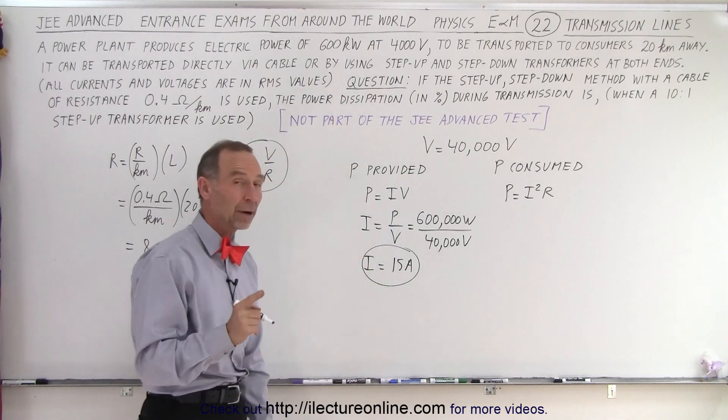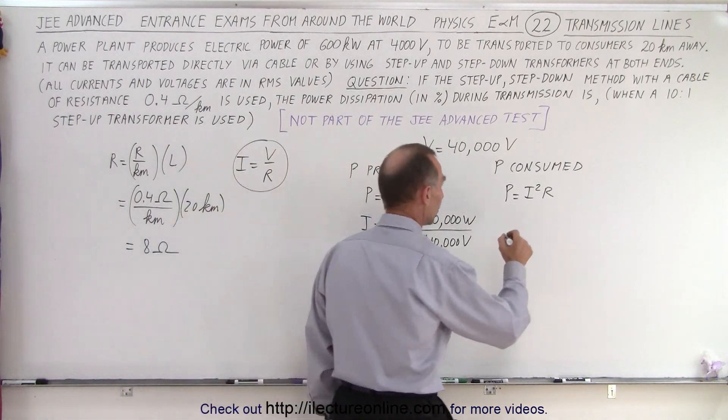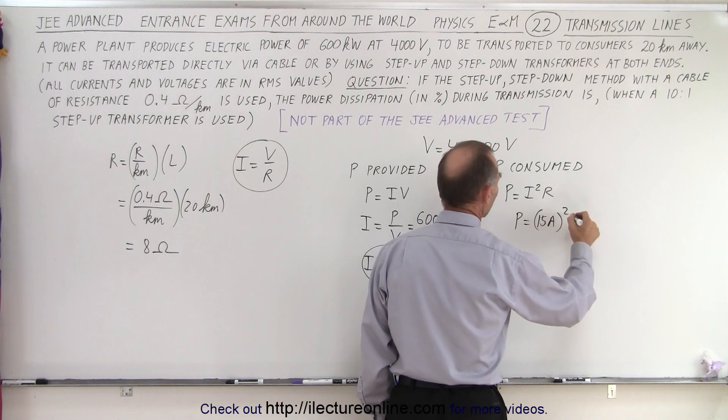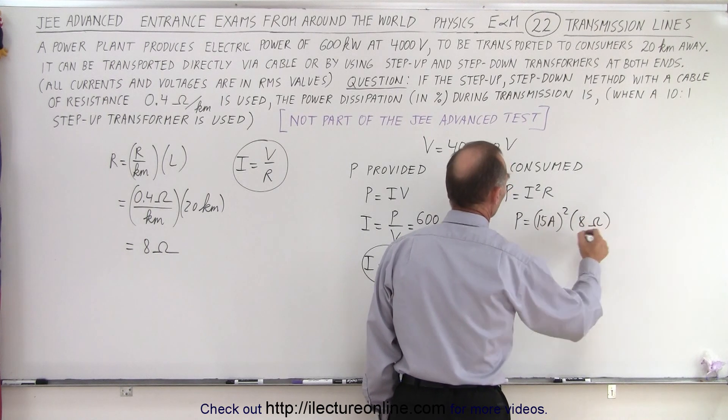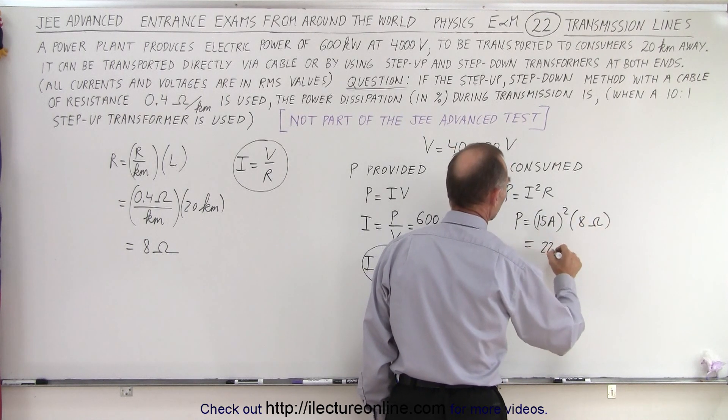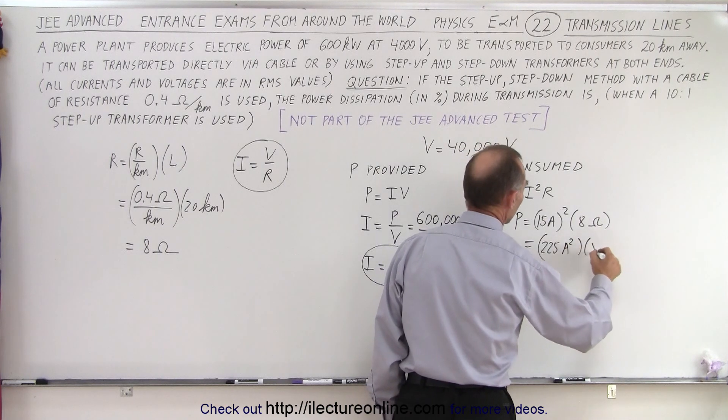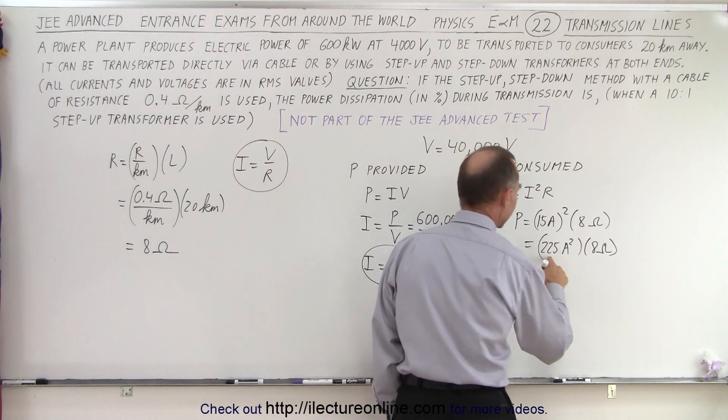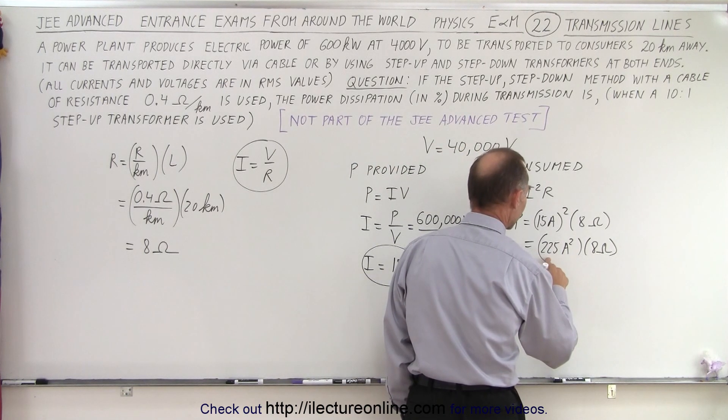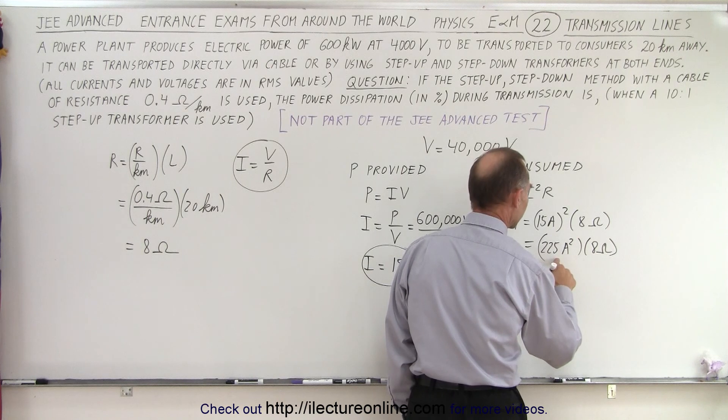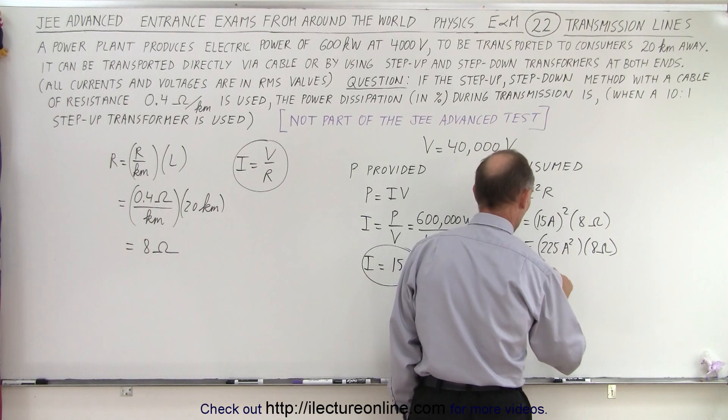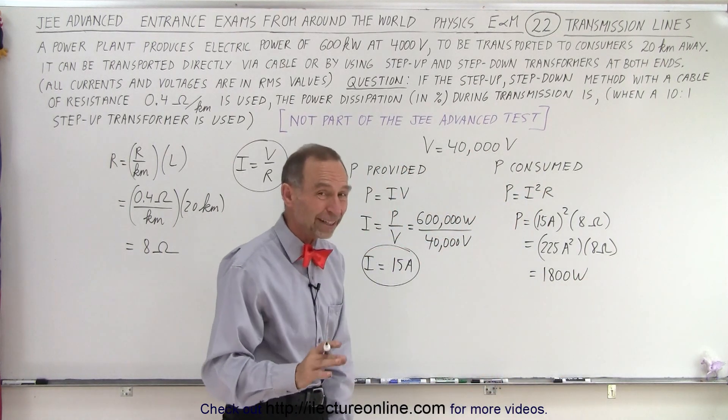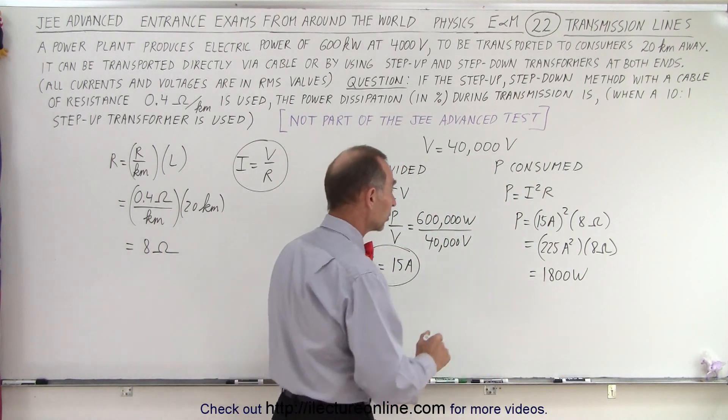Now we can see how much power we're actually losing on the line. So power consumed, P is going to be 15 amps squared times 8 ohms. So 15 squared, that would be 225 amps squared times 8 ohms. And let's see here, that's 8 times 20, that's 16, that's 18, that's 180, that's 1,800 watts. So instead of losing 180,000 watts, we're only losing 1,800 watts.